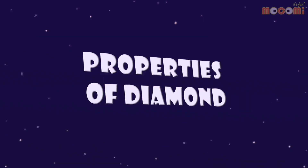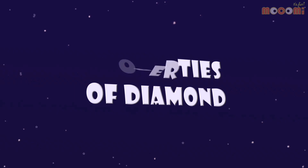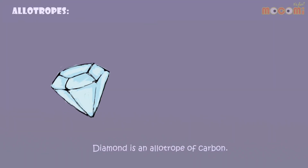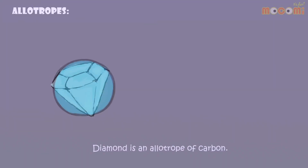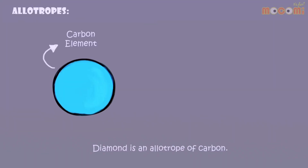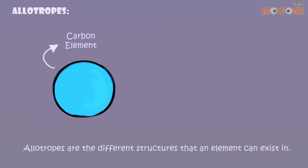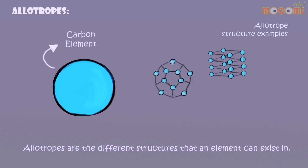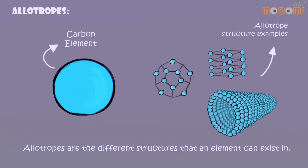Properties of Diamonds. Diamond is an allotrope of carbon. Allotropes are the different structures that an element can exist in.